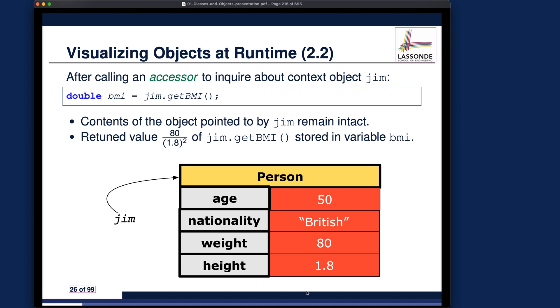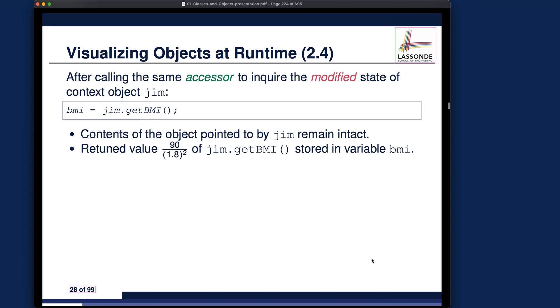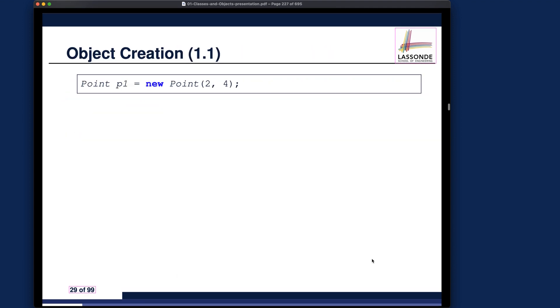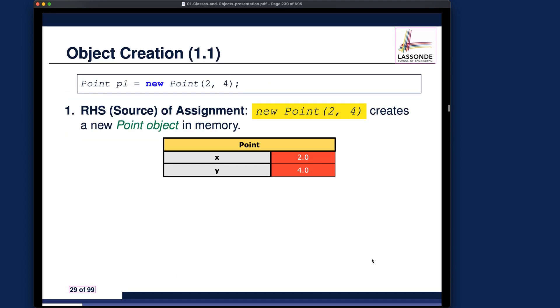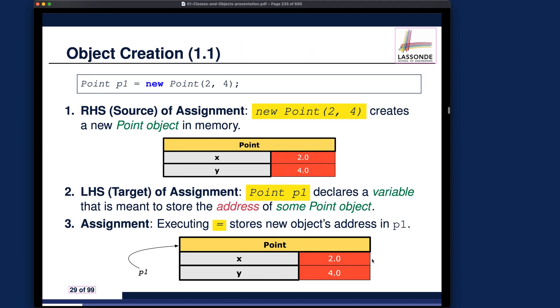That's what's happening. You will see visualization examples for other methods as well — it's the same idea, but now using point rather than person.